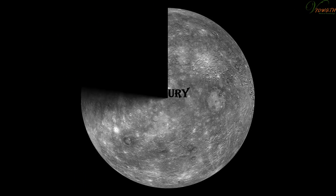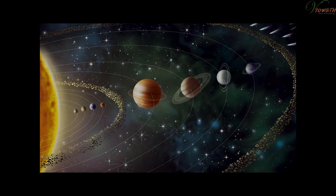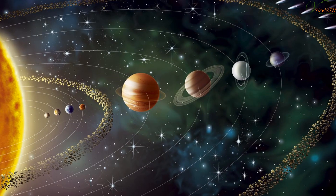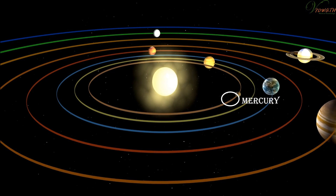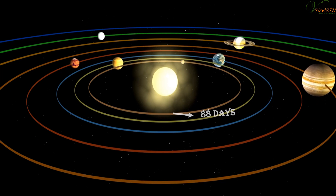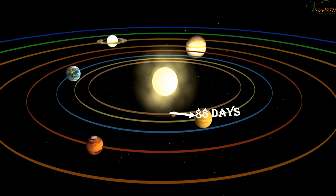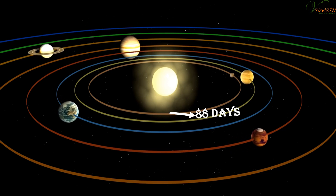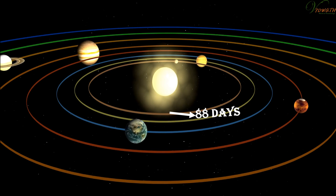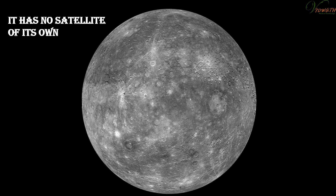Mercury is the smallest planet in the solar system and is the closest to the Sun. It takes about 88 days to complete one revolution around the Sun. It has no satellite of its own.